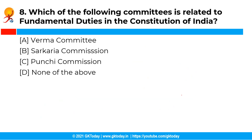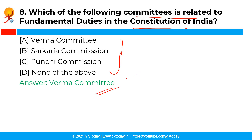The next question is: which of the following committees is related to the fundamental duties in the Constitution of India? The correct answer is option A — the Verma Committee. The Verma Committee, which was constituted on fundamental duties of the citizens in 1999, identified the existence of legal provisions for the implementation of some of the fundamental duties.